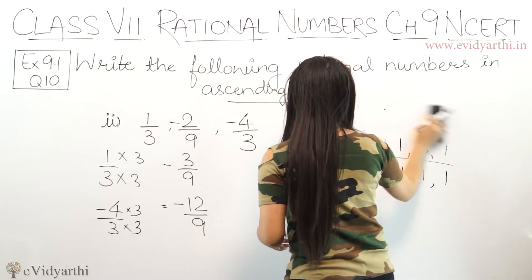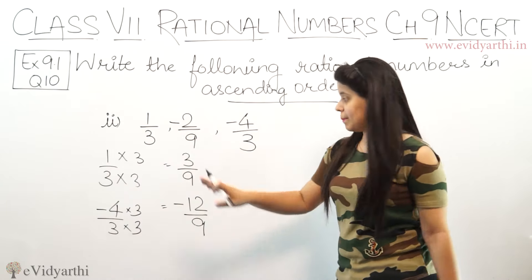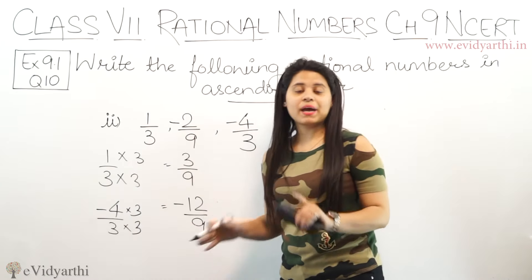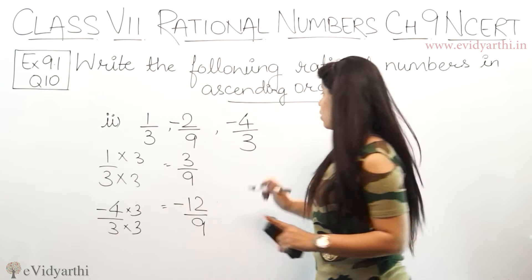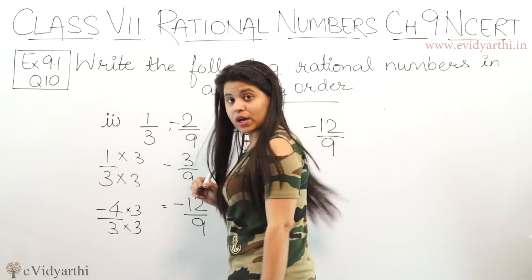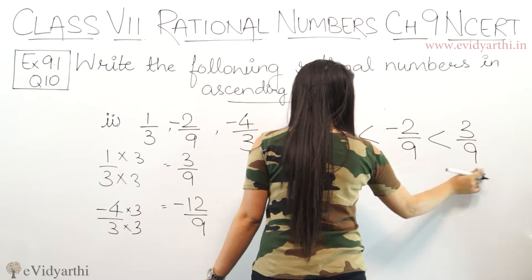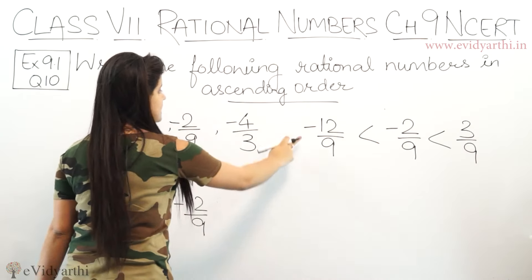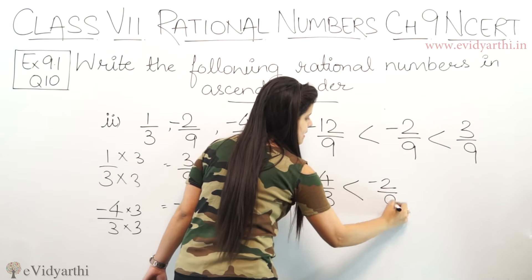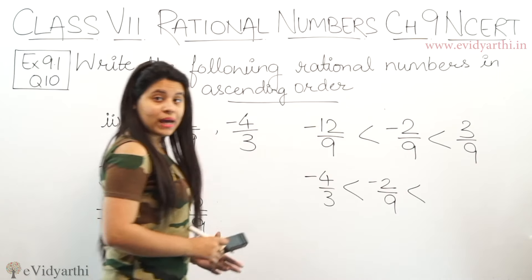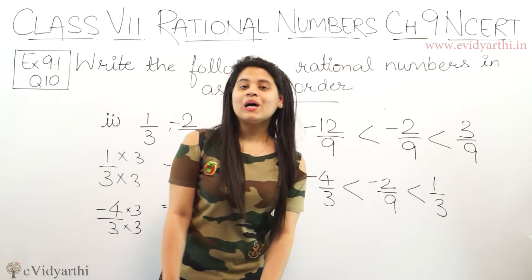अब हमें इन numbers को ascending order में arrange करना है. इसमें से सबसे छोटा number: ये तो positive number है, so यह सबसे last में आएगा, because positive number बड़ा होगा. Then एक है minus 12, एक है minus 2. So minus 12 छोटा होगा. Minus 12 upon 9 सबसे छोटा होगा, then minus 2 upon 9, and then सबसे बड़ा है 3 upon 9. अब इनके जो original numbers हैं — minus 12 upon 9 is minus 4 upon 3, then minus 2 upon 9 as it is, and 3 upon 9 is 1 upon 3. So ascending order: minus 4 upon 3, minus 2 upon 9, and 1 upon 3.